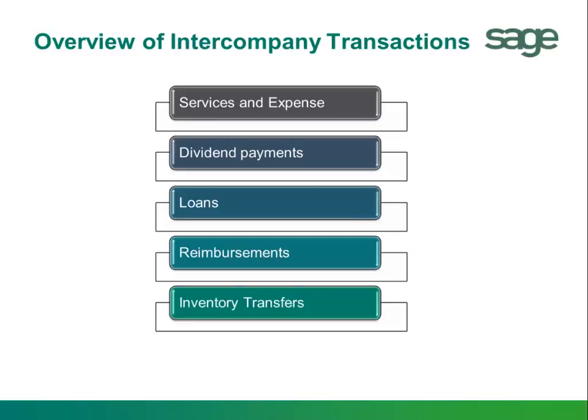Reimbursements, where a parent company may arrange and pay for external services for a subsidiary. Inventory transfers could be downstream sales — parent to subsidiary; upstream — subsidiary to parent; or lateral — subsidiary to subsidiary. Though there are many other examples, here are just a few.